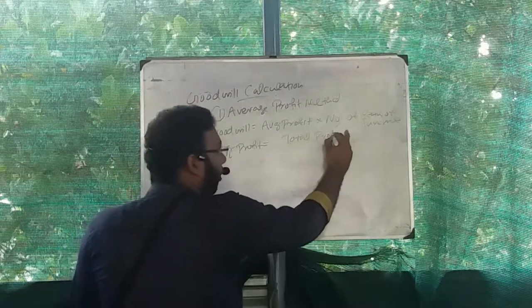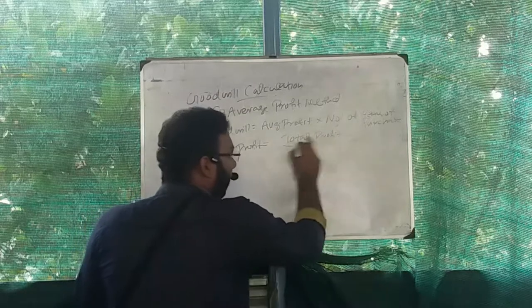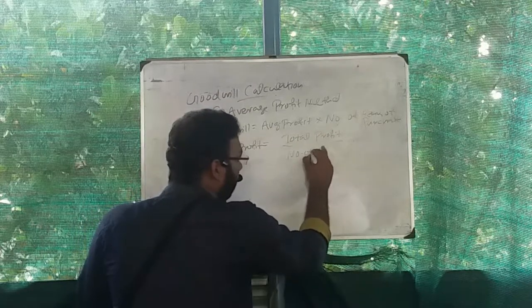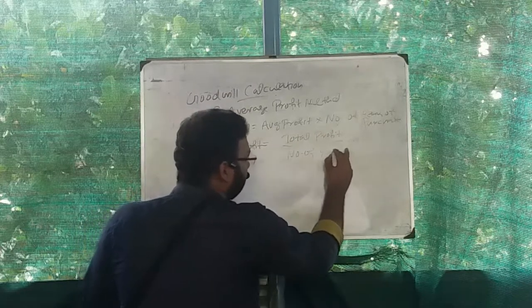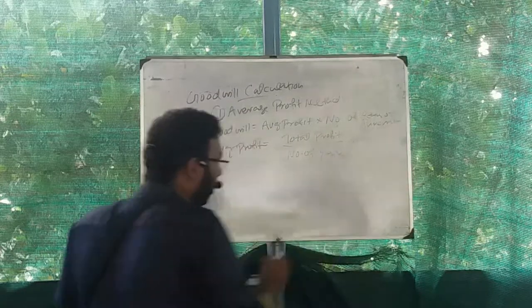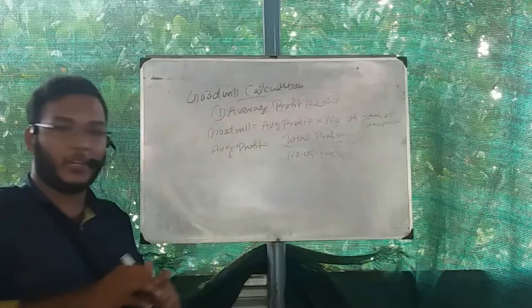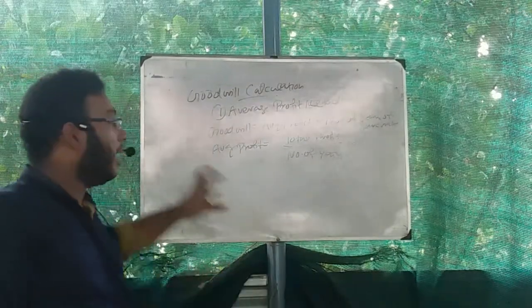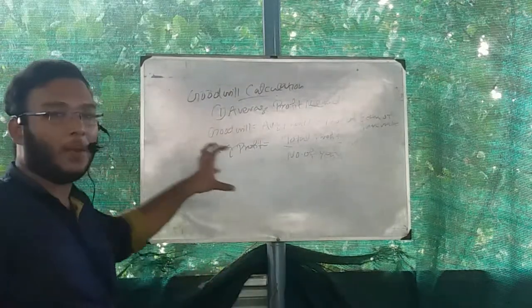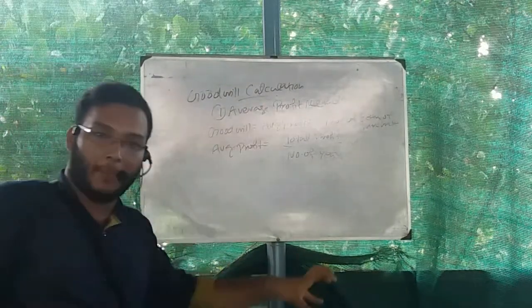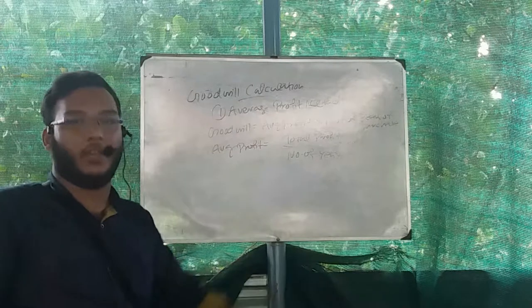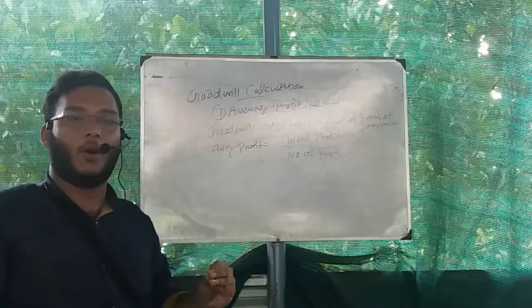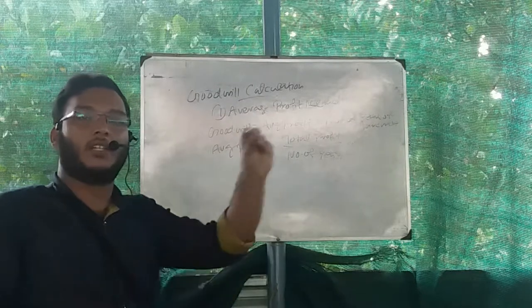Average profit is equal to Total Profit divided by Number of Years. This means that we have to know the profit over 4 years.